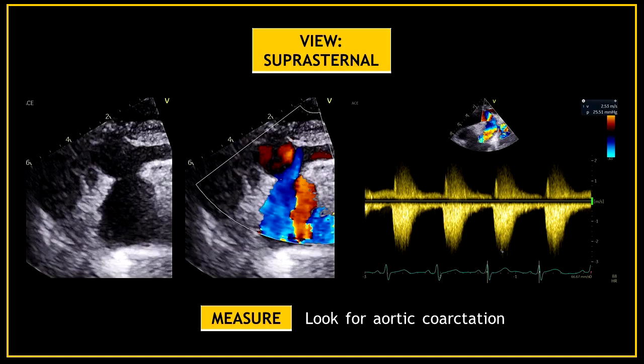It's also important to look for any aortic coarctation. In these images you can see a narrowing of the descending aorta with raised forward flow.